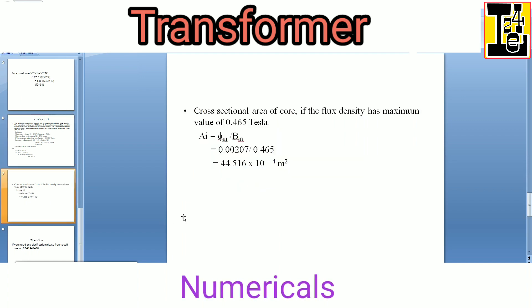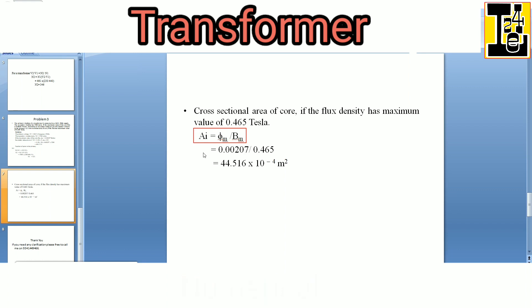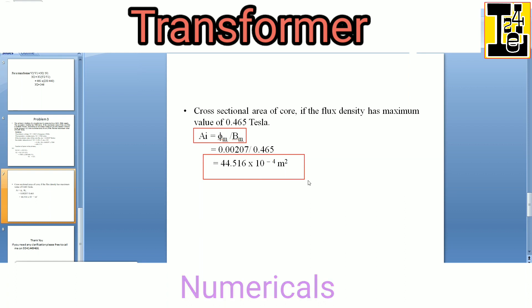The third bit is calculating the cross sectional area of the core if the flux density has maximum value of 0.465 tesla. We have the formula: the net cross sectional area AI is equals to φm divided by Bm, where φm is the maximum flux and Bm is the maximum flux density. Substituting the values, we get the cross sectional area AI is equals to 44.516 into 10 raised to minus 4 meter square. So this is the solution for problem number 3.